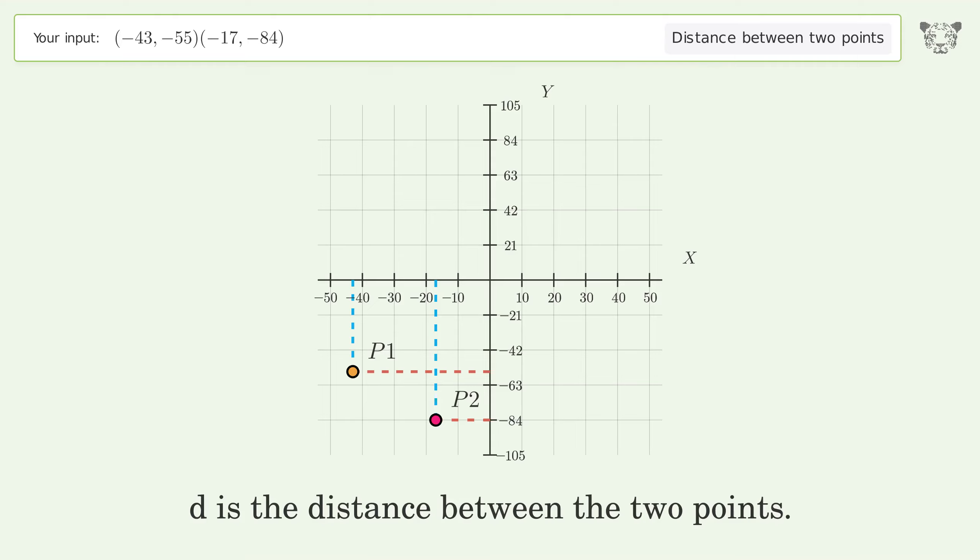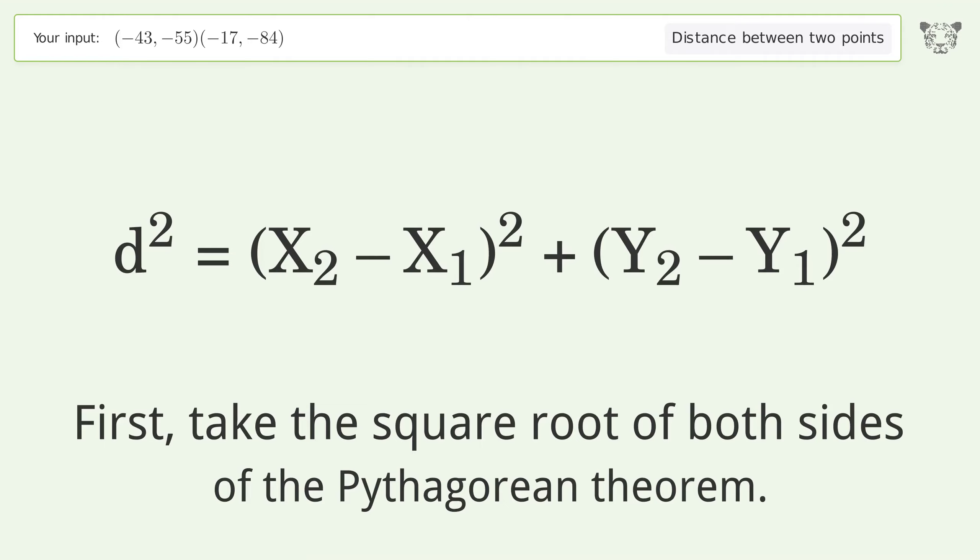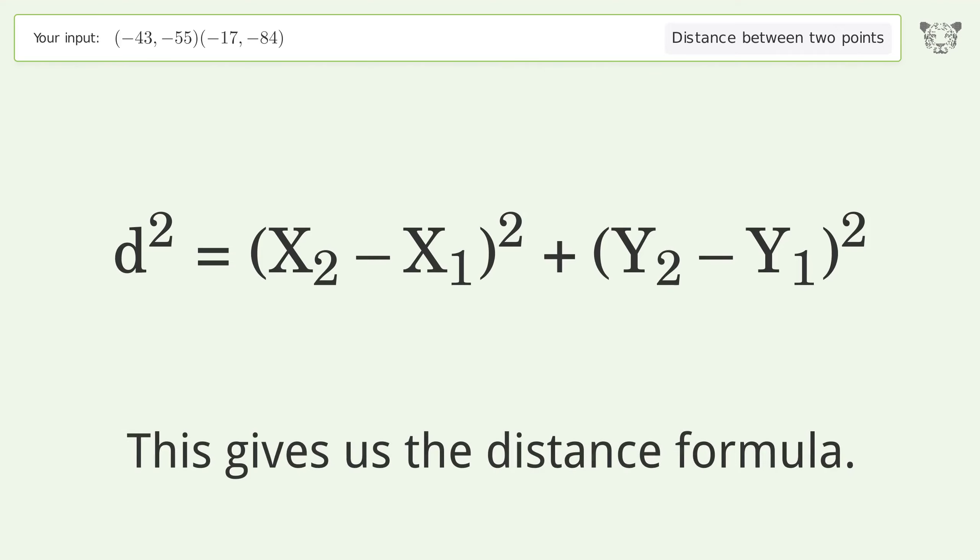d is the distance between the two points. First, take the square root of both sides of the Pythagorean theorem. This gives us the distance formula.